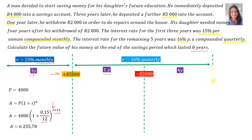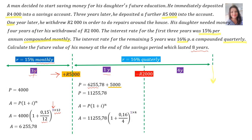Then the 5000 rand was added. Therefore P is now the answer from the previous sum — 6,255 rand plus 5,000 equals 11,255 rand and 78 cents. Into the compound interest formula: A equals P bracket one plus I to the N. P's value is 11,255 rand. The R is 16%, therefore 0.16, but compounded quarterly, so divide R by 4, and all of this is for one year — that's 1 times 4 compounded quarterly. Therefore A equals 13,167 rand and 67 cents.